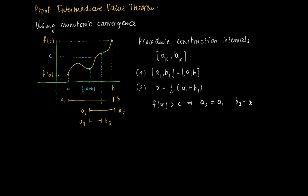So the reason why we do this is that we move the right-hand point towards the left. We get an interval of half the size but still c is in between the function value in the left-hand point and the right-hand point. Well if f(x) happens to be smaller than c then we shift the left-hand point. So a2 is x and b2 equals b1.